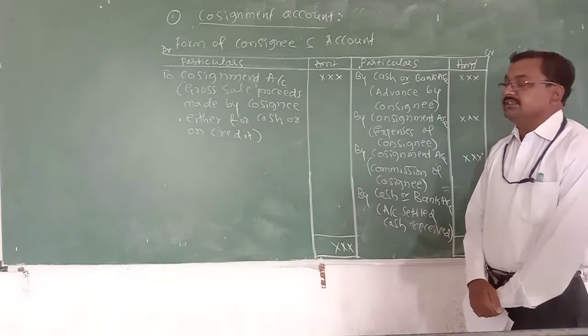Gross sales receipts made by the consignee, either for cash or on credit. Sales made by the consignee are either for cash or on credit - cash sales or billing on credit. This is taken on the debit side of the consignee's account. Then, by cash or bank account.